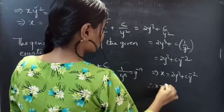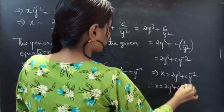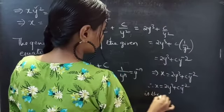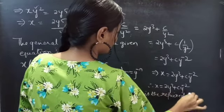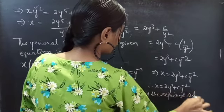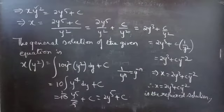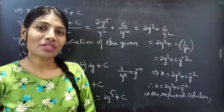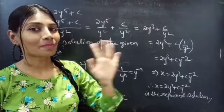Therefore, x equals 2y³ plus C·y⁻² is the required solution. So we have seen a problem on linear equations in this video. Hope you will understand. We will see you in the next video. Until then, bye-bye.